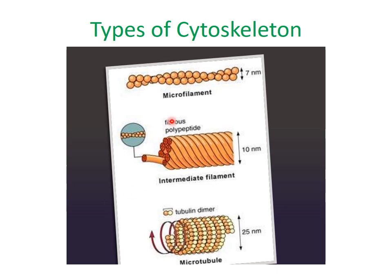The microfilaments are thin filaments made up of actin filaments wound together in a double helix manner. The intermediate filaments are made up of various types of proteins and are thread-like fibers. The microtubules are hollow tubes made up of the protein tubulin dimers.